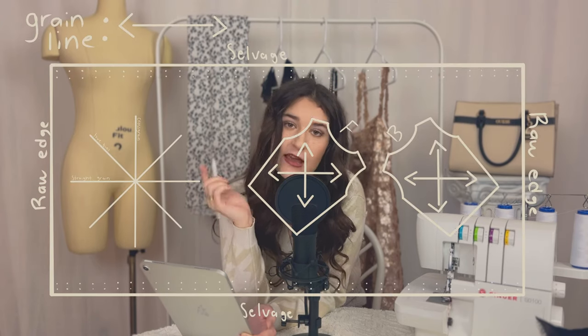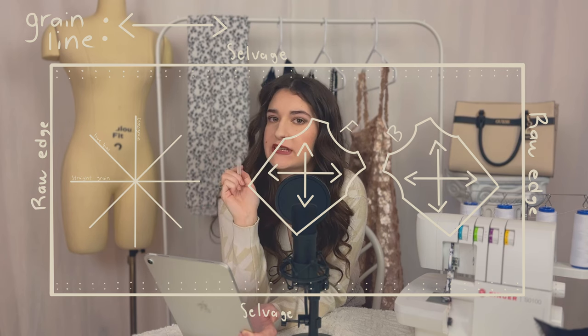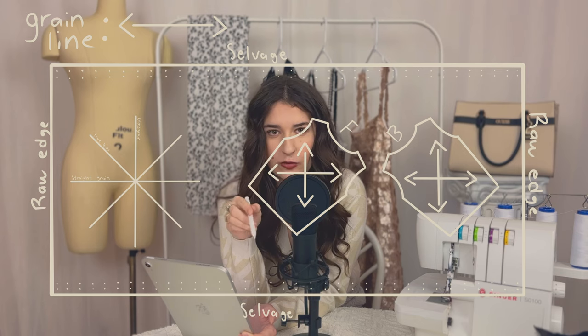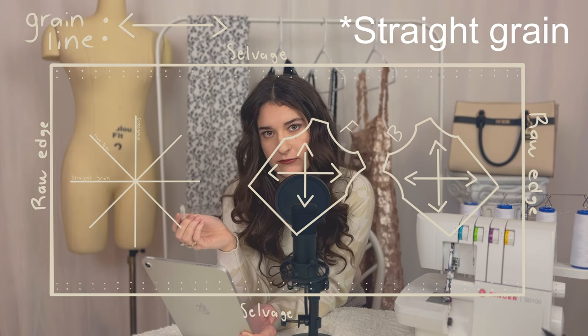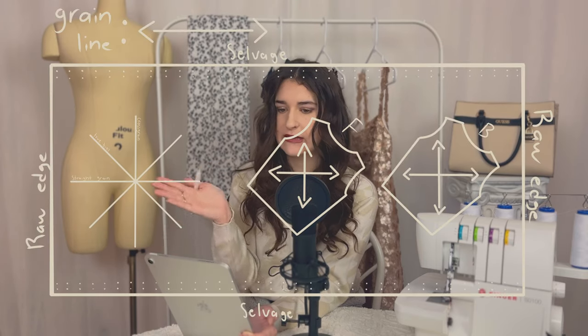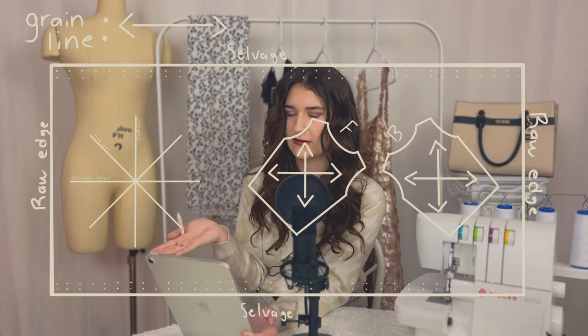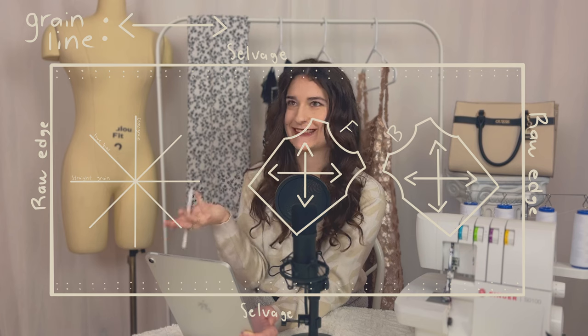If your pattern piece has two arrows in the shape of a T, that means cut it on the bias. One arrow needs to be parallel to the cross grain and the other needs to be parallel to the grain line. Be careful: if you have a front piece and a back piece, they both have to be on the bias but in opposite directions. There's a drawing to help you understand, because if you don't do that, it's going to look weird — you want it to drape nicely.